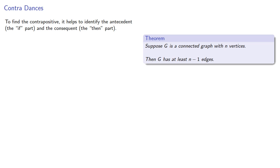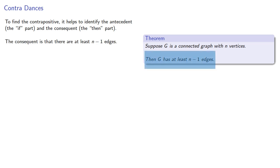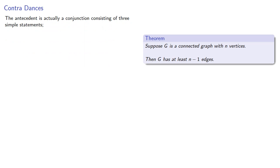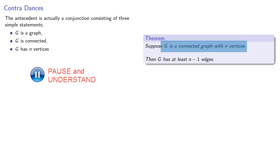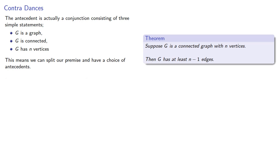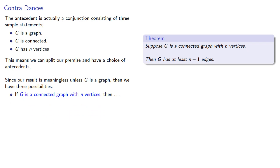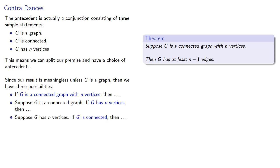To find the contrapositive, it helps to identify the antecedent (the "if" part) and the consequent (the "then" part). The consequent is that g has at least n-1 edges, so that's easy to identify. The antecedent is actually a conjunction consisting of three simple statements: g is a graph, g is connected, and g has n vertices. This means we can split our premise and have a choice of antecedents. We can take the compound statement "g is a connected graph with n vertices" as our antecedent, or split off "g is a connected graph" and take the rest as our antecedent, or take "g has n vertices" and the rest as our antecedent.